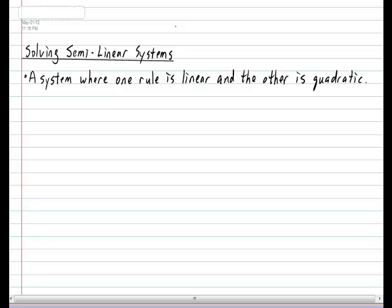So these kinds of systems are asking you when will the line intersect with a parabola. Now if all this already sounds complicated rest assured that after a couple of examples you will be solving semilinear systems very easily.